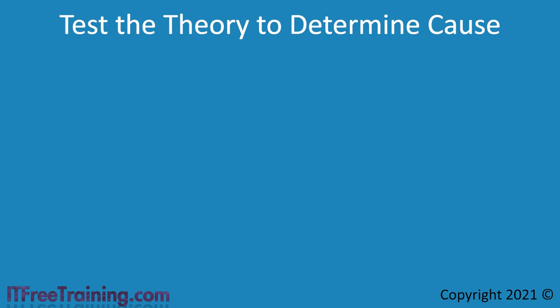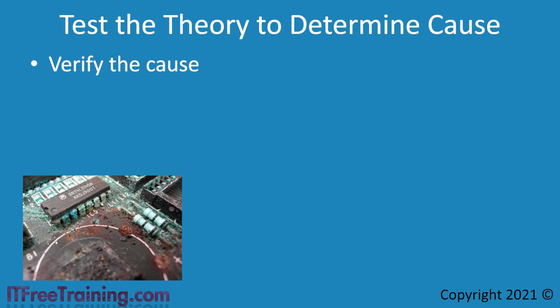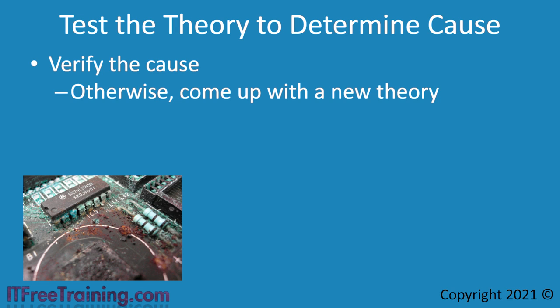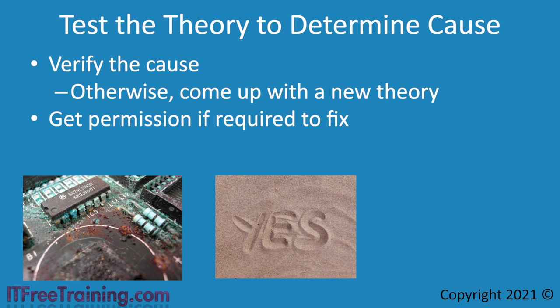The next step is to test your theory to determine if it is the cause. In some cases, this may be verifying that a part is broken. In our example, the problem is that a Windows update is causing a conflict with the software — a conflict that was not a problem until the software was updated. We have verified the software version and the particular Windows update causing the problem. If your theory is not what is causing the problem, come up with a new theory. Once you establish what is wrong, you may need to get permission to fix it — speaking to your manager or putting in a request. In our example, the solution is to remove either the software update or the Windows update, but since Windows updates are managed, removing it would cause the network management software to reinstall it, putting us back in the same position.